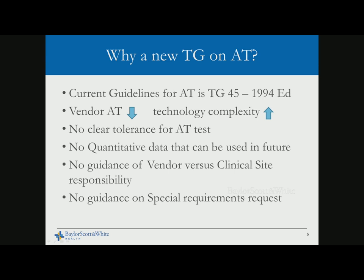So why a new TG report? We have TG report 2.10 looking at acceptance testing recommendations. The current guidelines come from TG 45, a 1994 edition, and a lot of things have changed in the last 22 years. If you look at what is happening with vendor acceptance testing, the tests and documentation are reducing while the technology and complexity are actually increasing.